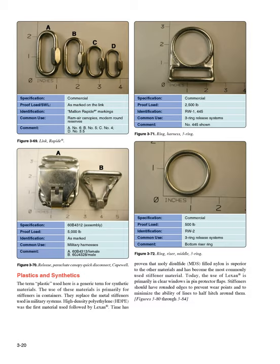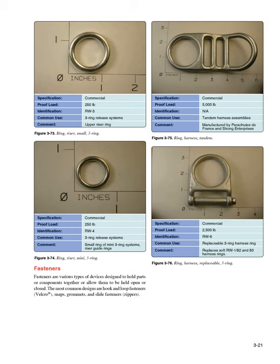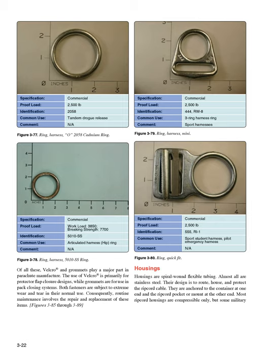Fasteners: Fasteners are various types of devices designed to hold parts or components together, or to be held open or closed. The most common designs are hook-and-loop fasteners (Velcro), snaps, grommets, and slide fasteners (zippers). Of all these, Velcro and grommets play a major part in parachute manufacture. The use of Velcro is primarily for protector flap closure designs, while grommets are for use in pack closing systems. Both fasteners are subject to extreme wear and tear in their normal use; consequently, routine maintenance involves the repair and replacement of these items.